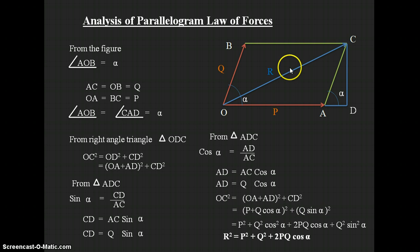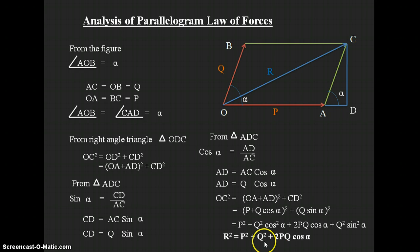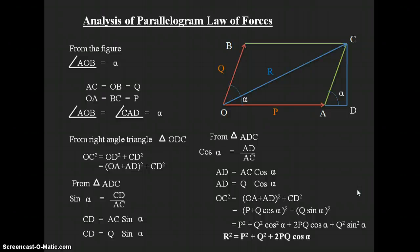Since OC is the diagonal of the parallelogram, it equals the resultant force R. Therefore: R² = P² + Q² + 2PQ·cos(alpha). This is the analytical formula for finding the resultant force of two forces acting on a body, represented as the two adjacent sides of a parallelogram.